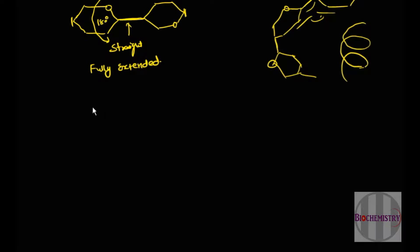Because of this fully extended structure, the glucose chain will now look like this. These dashes are showing glucose molecules. It is just like a ribbon.